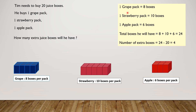One grape pack equals 8 boxes. One strawberry pack equals 10 boxes. One apple pack equals 6 boxes. So the total number of boxes he will have equals 8 plus 10 plus 6, which equals 24. And the number of extra boxes is 24 minus 20, which equals 4.